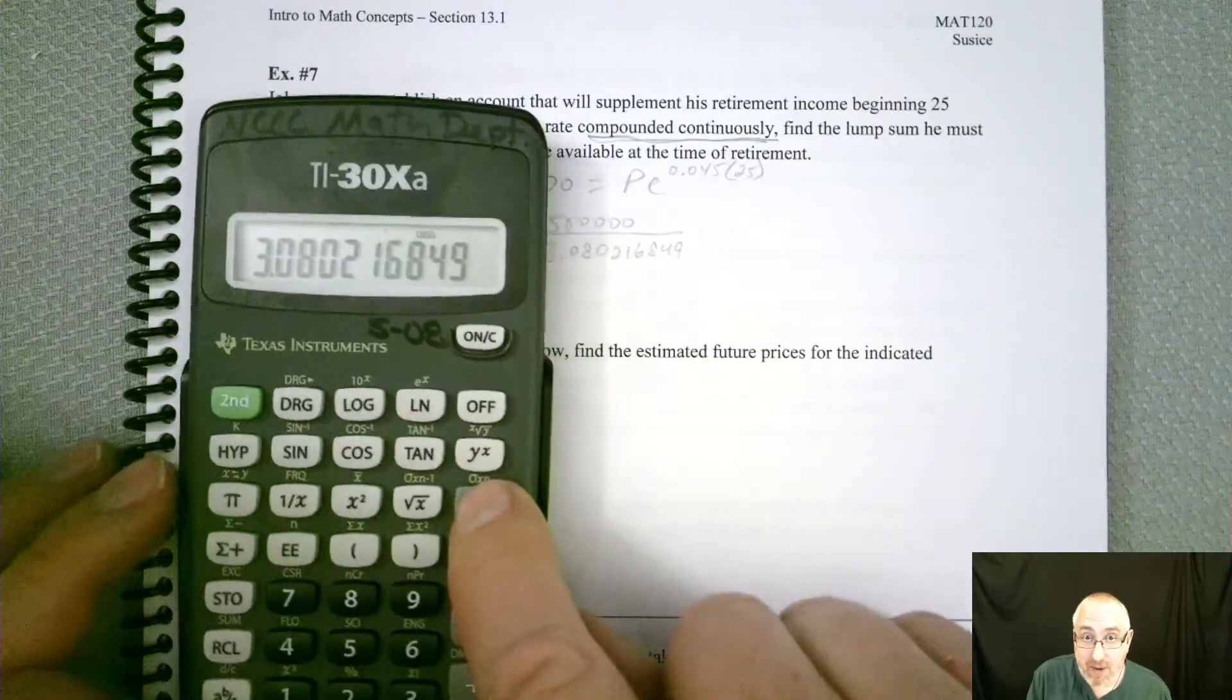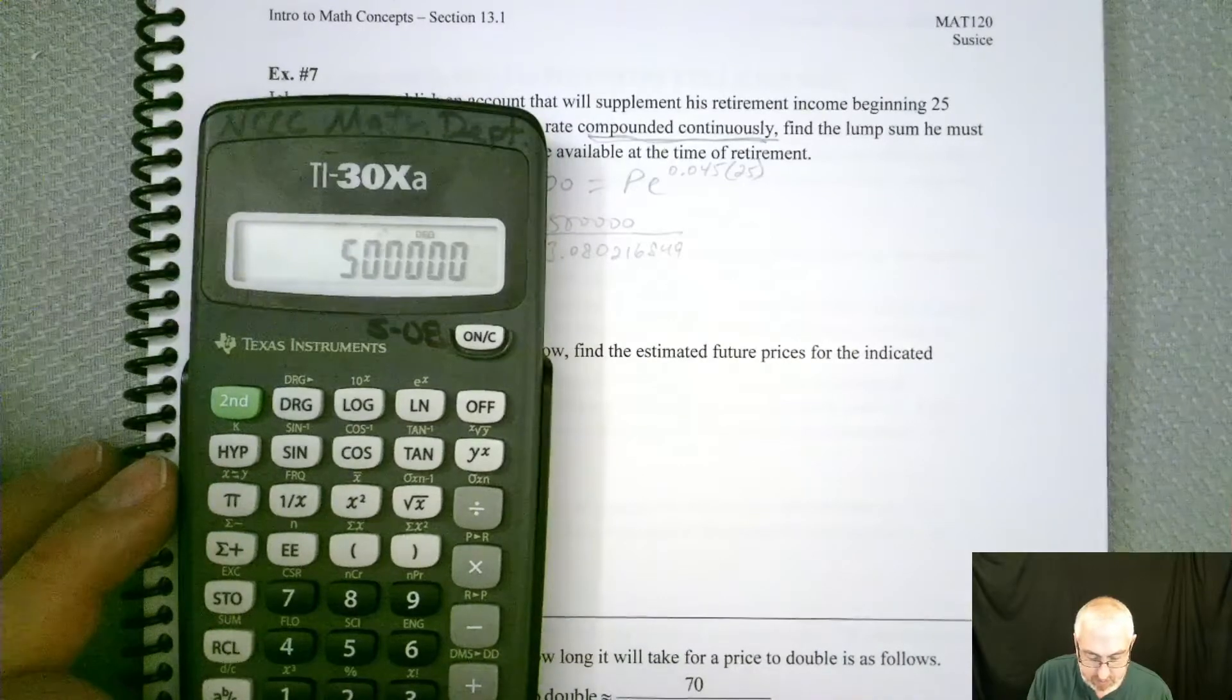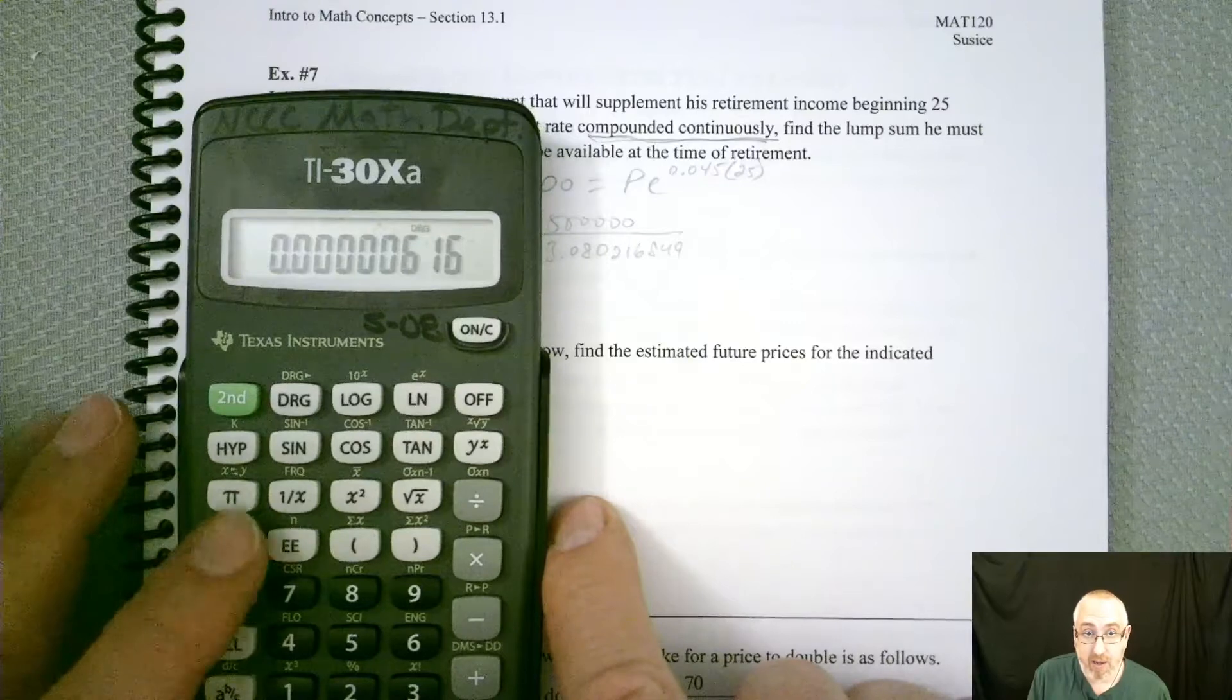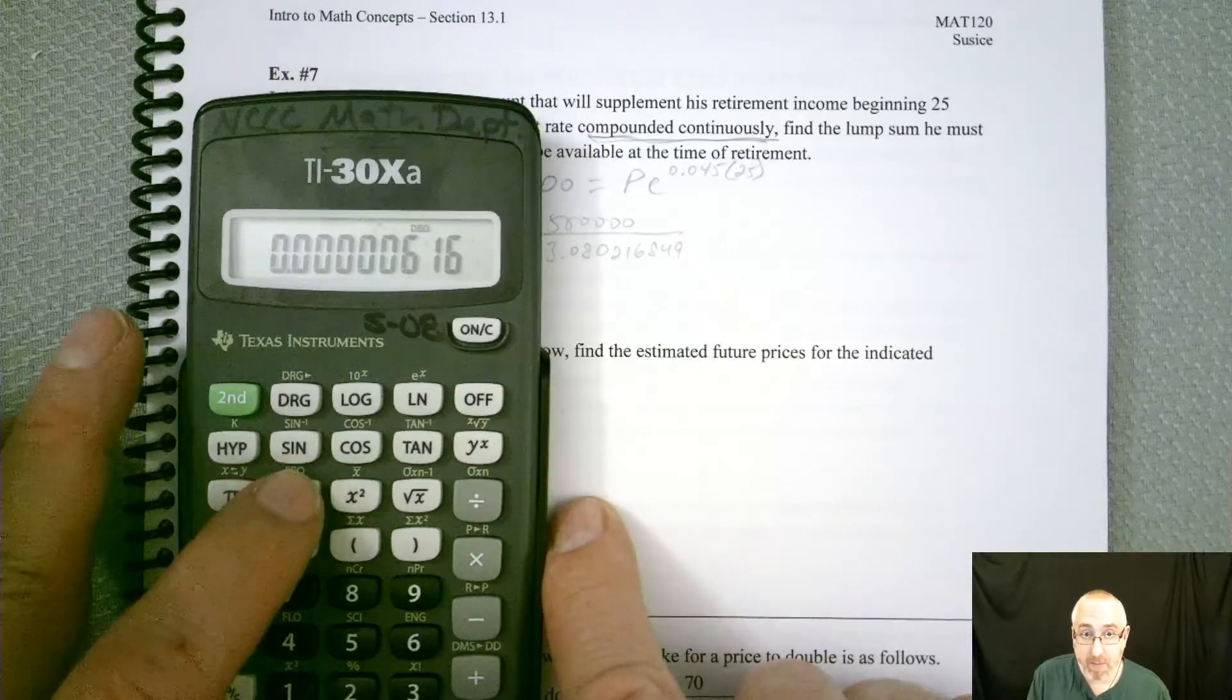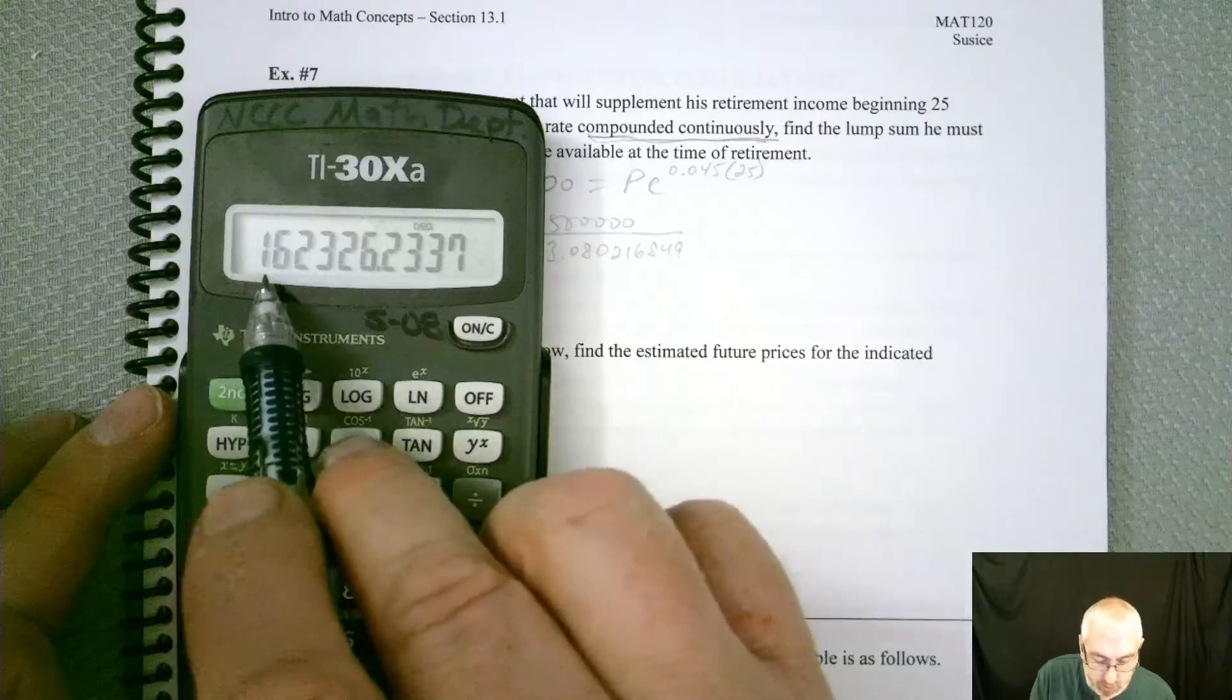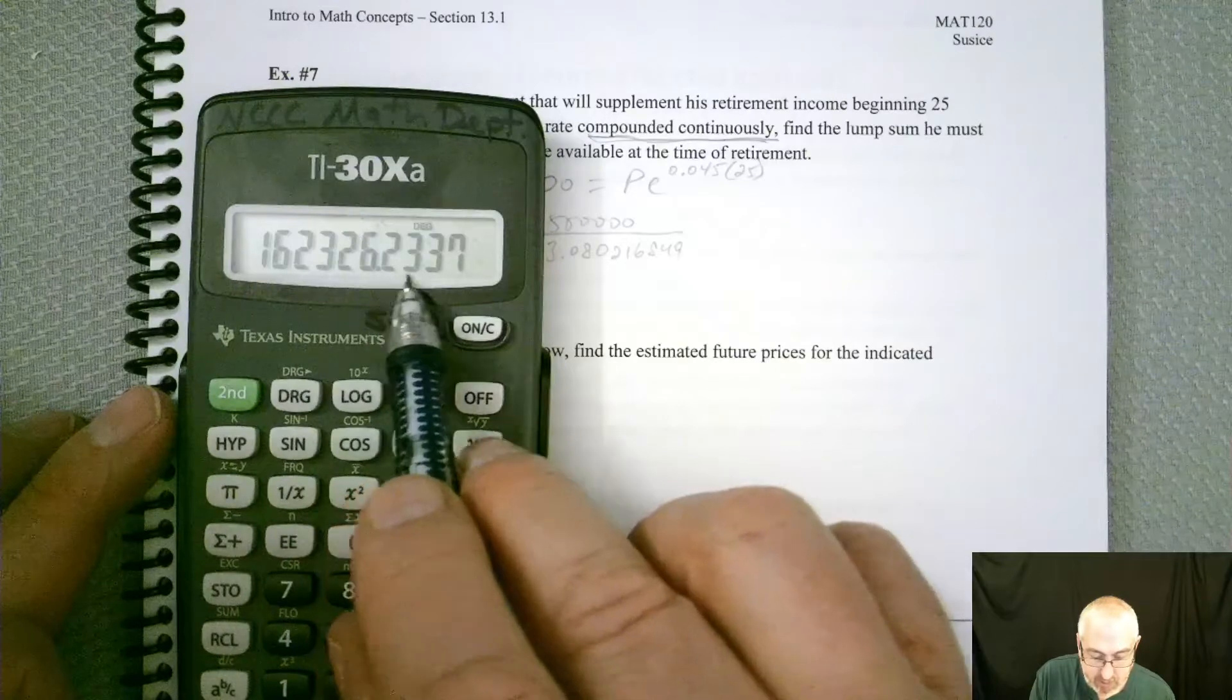So remember, if I divided it backwards, if I divide this by 500,000, I get this very small number. But if I flip it around, that should be my answer. So $162,326.23.